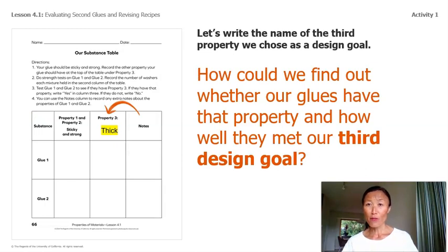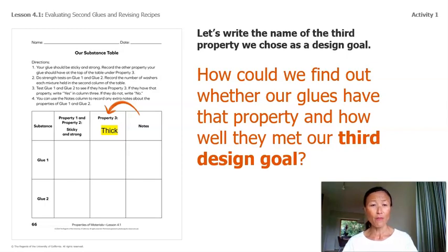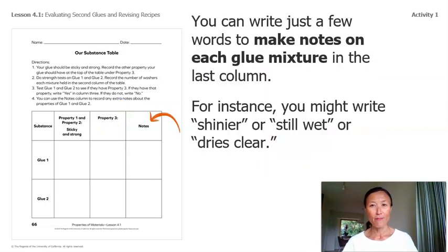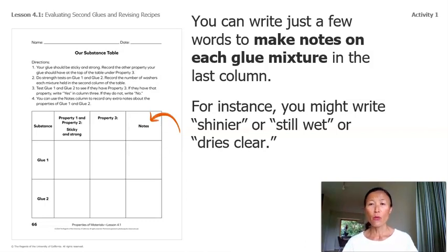Let's write the name of the third property we chose as a design goal, which is 'thick.' How can we find out whether our glues have that property and how well they'll meet our third design goal? You may need to use observations, not testing, to figure out if the glue met the third design goal. You could just write a few words to make notes on each glue mixture in the last column — for example, you might write 'shinier,' 'still wet,' or 'dries clear.'